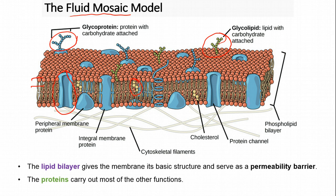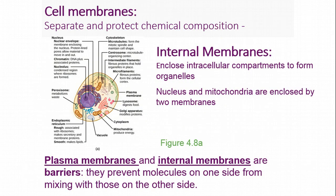We call this the fluid mosaic model. The main function of cell membranes is to separate and protect chemical composition. There are a lot of different things going on inside the cell, and many of these things are mutually incompatible.